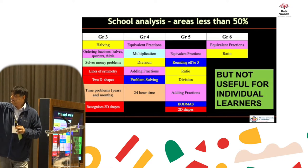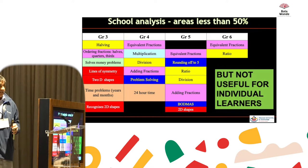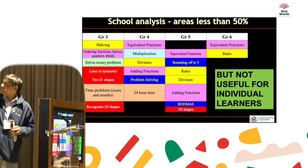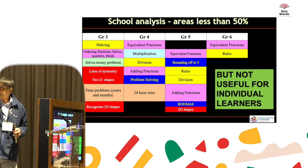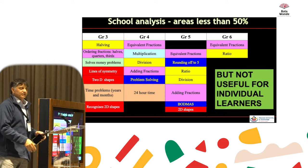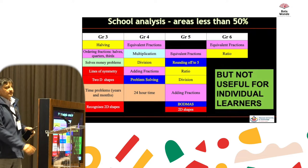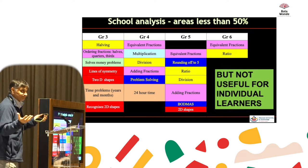I met a teacher who was doing something really smart. She took her results from across grade 3, 4, 5, and 6 and basically said: which sections did the school do poorly on? And she found that in every grade, her school has a problem on ordering fractions. Again, useful for the school, but not for individuals.